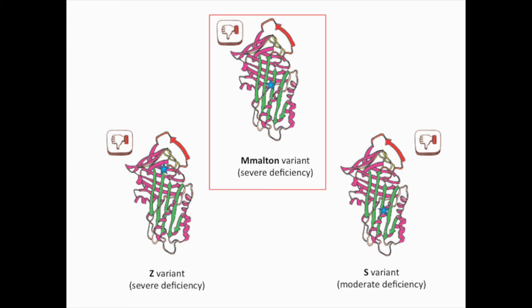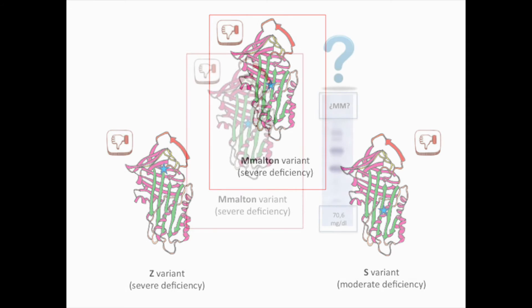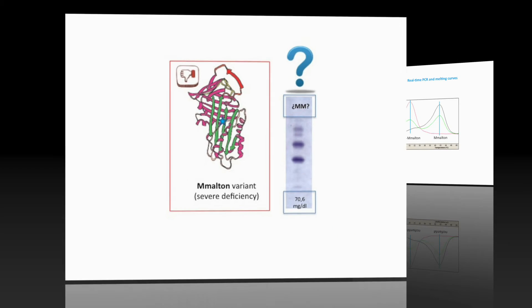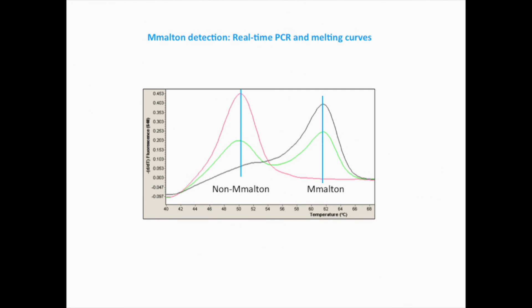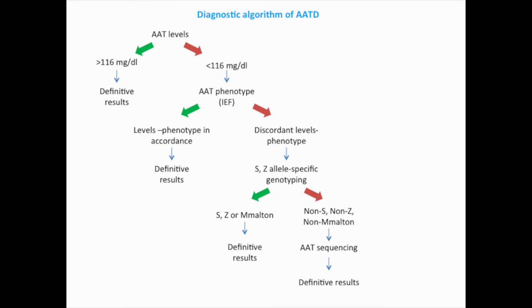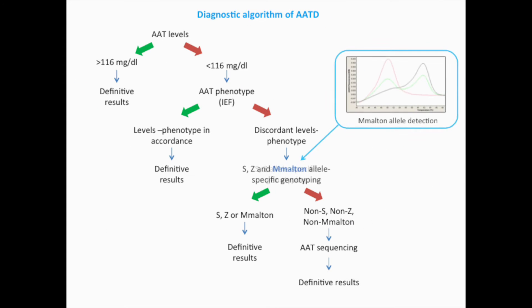However, this variant is not recognizable by usual diagnostic techniques. For this reason, we have recently developed a rapid real-time PCR and melting curves assay for the detection of the M. Malton allele.